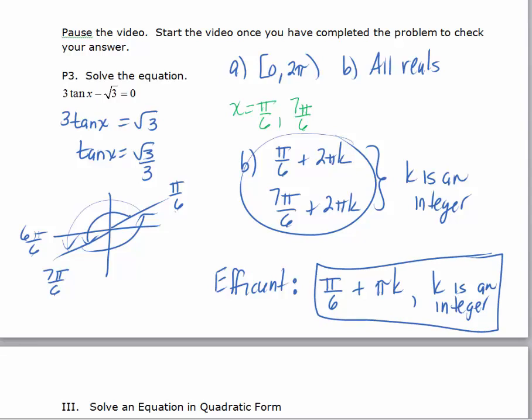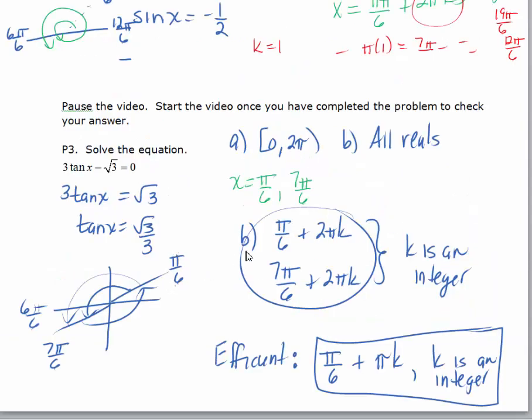That happens every once in a while, more often with tan, because tangent has the same sign from the first and third quadrant and from the second and fourth quadrant, which generates these solutions that are π radians apart. Also, since the period for tangent is π, it means you're going to generate the same solution, the same trigonometric function, every π radians, where for sine and cosine the period was 2π. So when you're dealing with solutions for tangent, your general solution, you want to use π k.